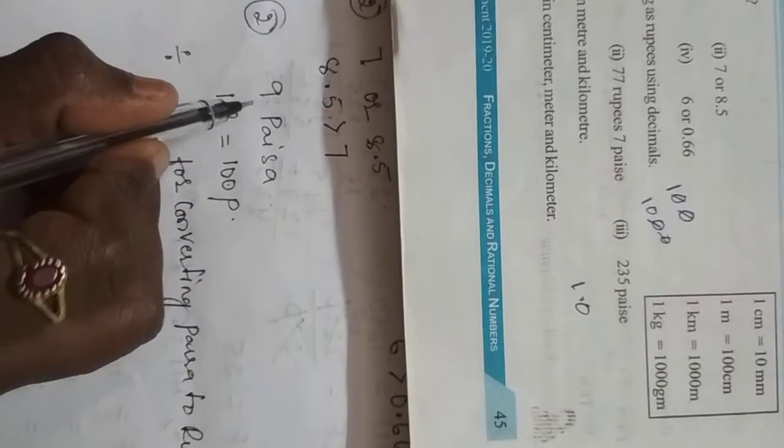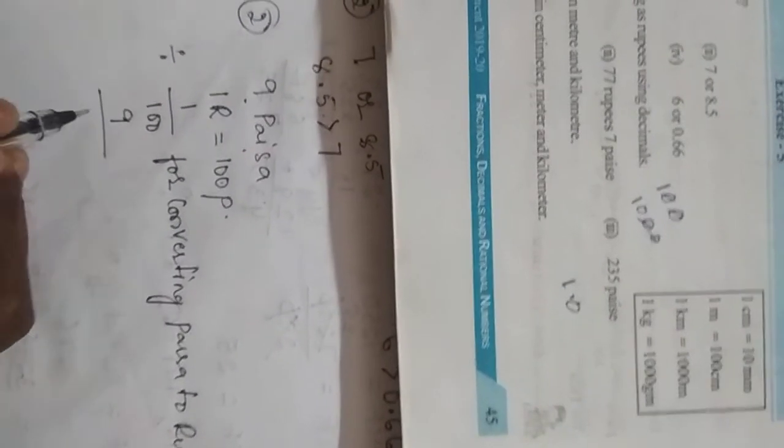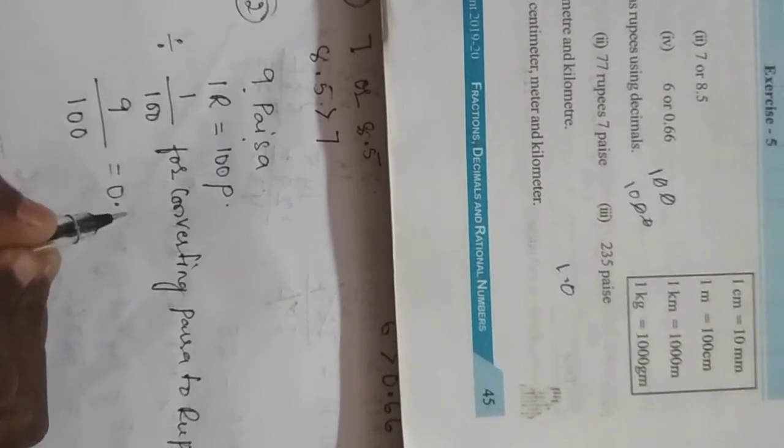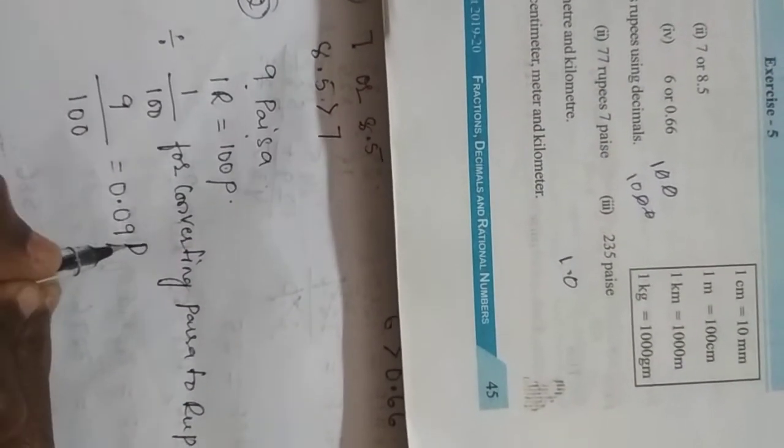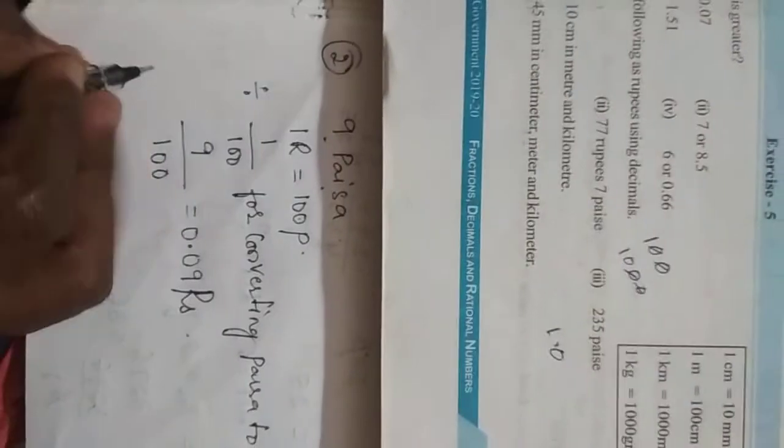What do you have to convert? 9 paisa into rupees. So what do you have to divide? 9 should be divided by 100. Therefore, it is nothing but 0.09 rupees. Is it clear? Yes.